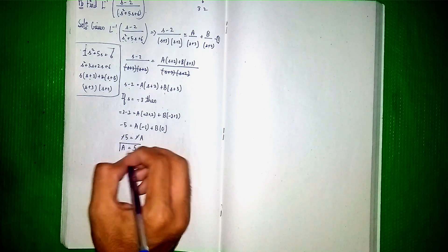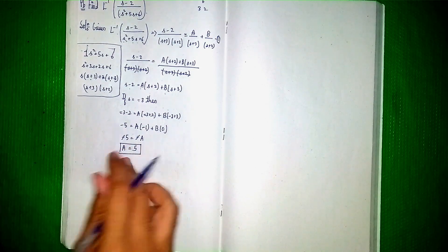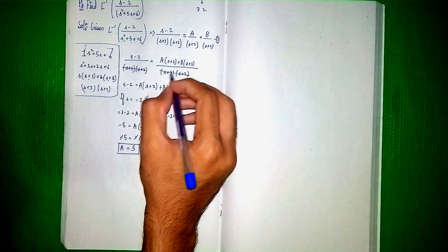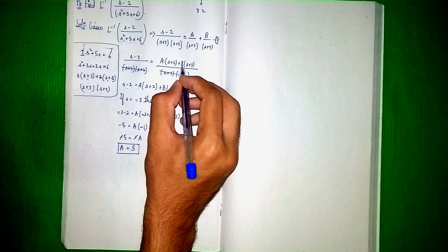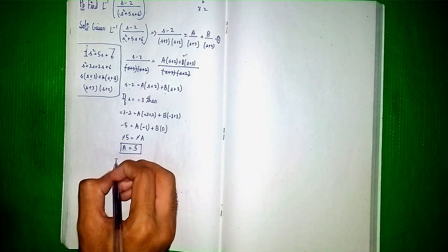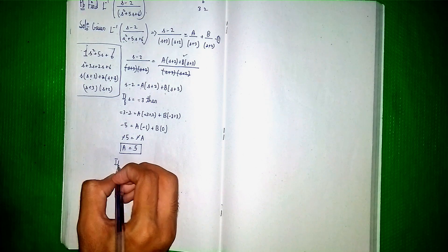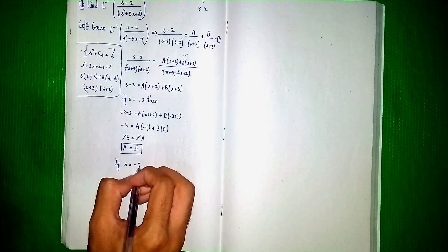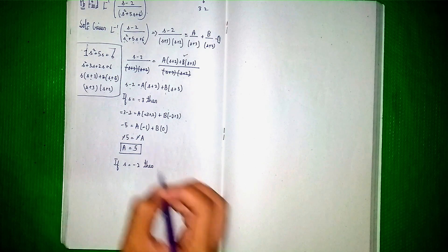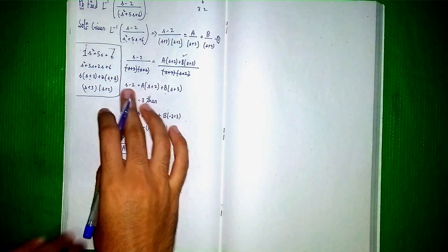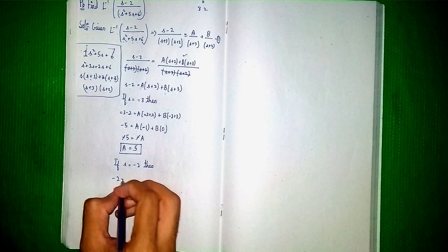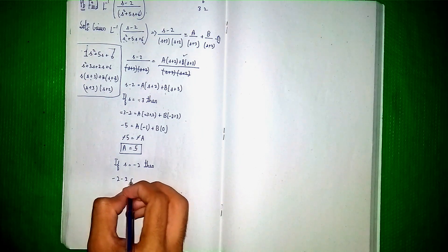Now we have found the value of A. Next we find the value of B. For the second case, if s equals minus 2, substituting into s minus 2 equals A(s plus 2) plus B(s plus 3): minus 2 minus 2 equals A(minus 2 plus 2) plus B(minus 2 plus 3).